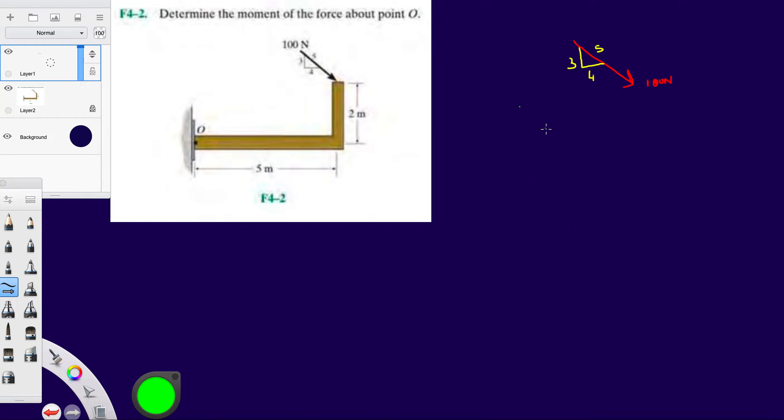So the x-component here is going to be the adjacent side to this angle—it's going to be 4. Or just pick the side that's aligned with the x-axis, parallel to the x-axis. So it's going to be 4 over the hypotenuse times 100. This should give you 80 Newtons.